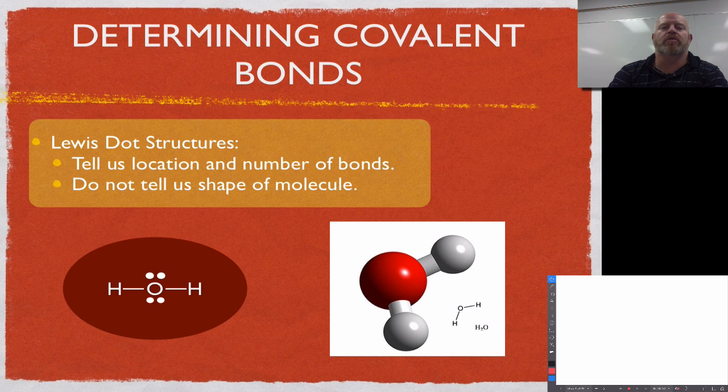Okay guys, in this video we're going to go through the process of writing out proper Lewis dot structures and the method behind that. So the first thing we need to talk about with Lewis dot structures is what they can do for us and what they can't do for us. Lewis dot structures are not designed to give us the shape of a molecule. What they are designed for is giving us a location and number of bonds and electrons on the molecule.